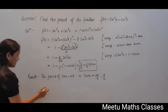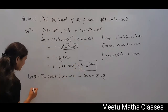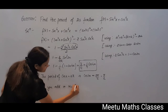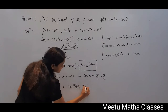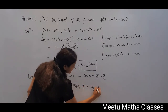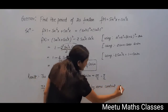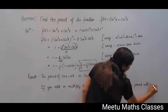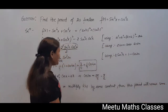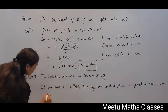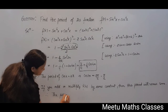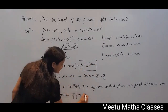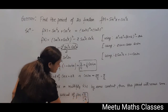If you add or multiply a function by a constant, the period remains the same. Since cos4x is multiplied by the constant 1/4 and added to the constant 3/4, the period remains π/2. So the period of your function f(x) is π/2.